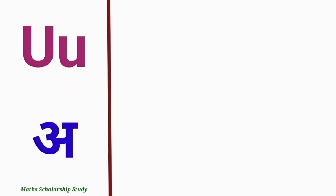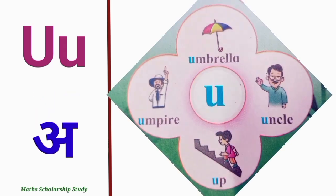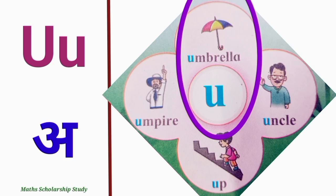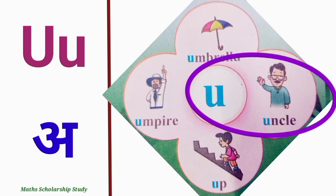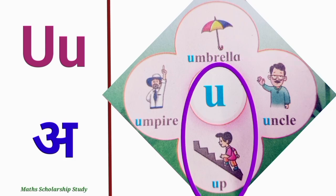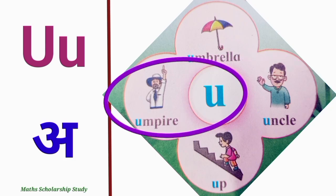Letter U. U says the short u sound. U for umbrella, U for uncle, U for umpire.